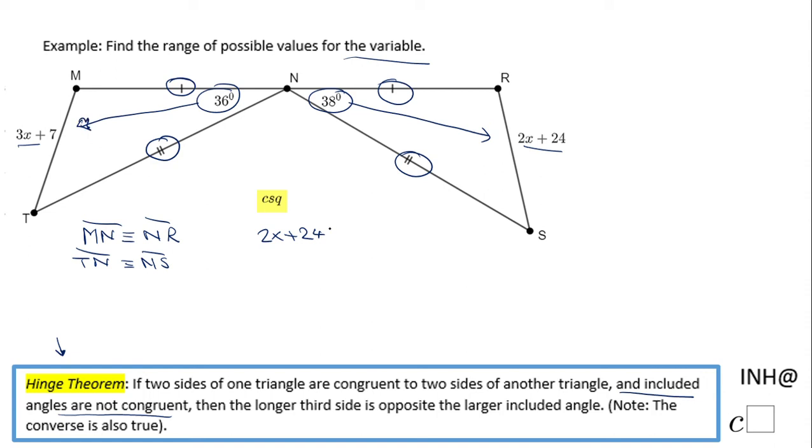So this is going to be the inequality: 2x plus 24 greater than 3x plus 7.